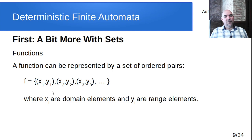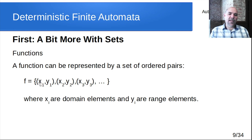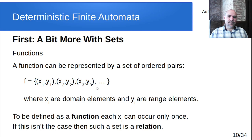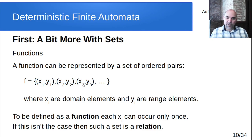One way to represent functions is as a set of ordered pairs — which we saw earlier with the Cartesian product. Each pair (X, Y) means X maps to Y. The X values before the comma are domain elements; the Y values after the comma are range elements. To be a valid function, each X can only appear once. If X1 appeared twice with different outputs, it would still be a relation, but not a function.